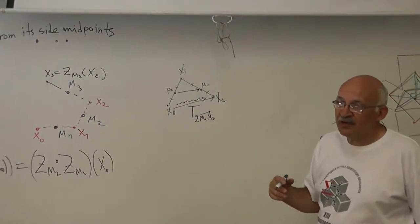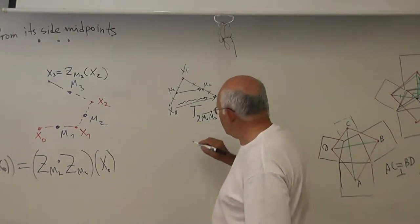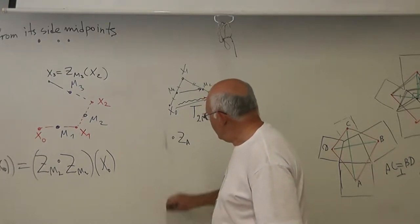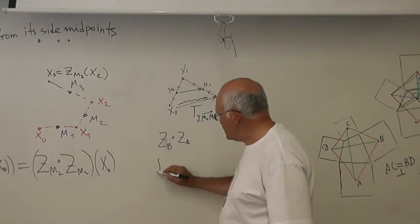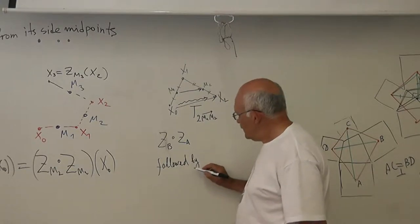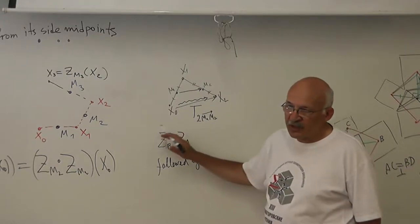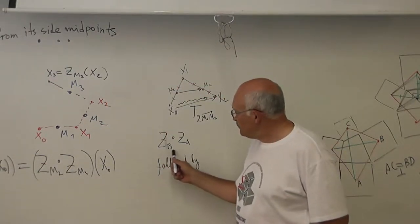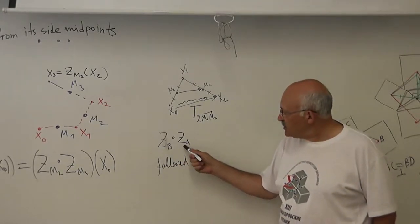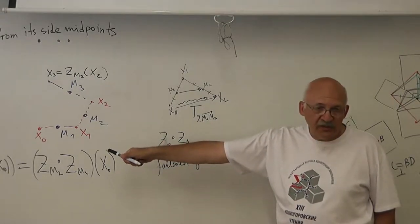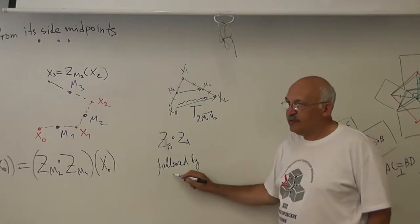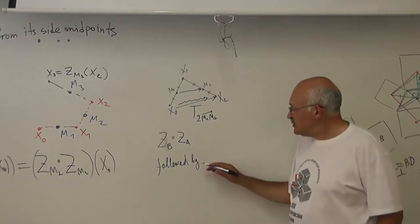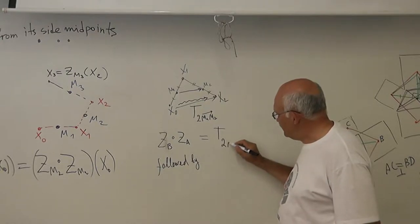So we can write the following formula. Important formula. ZA composition... Followed by ZB. In English we say followed by. ZA followed by ZB. We read it from right to left. In English we should say ZA followed by ZB. So, ZA followed by ZB is a translation by the vector 2AB.